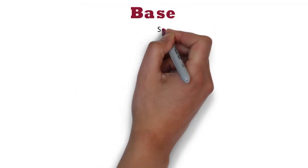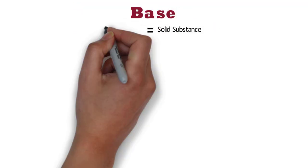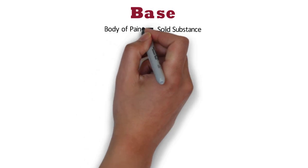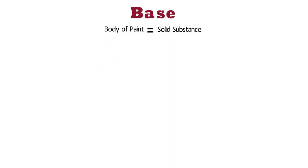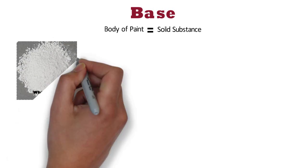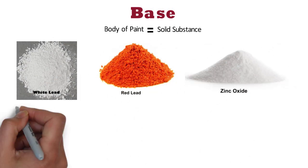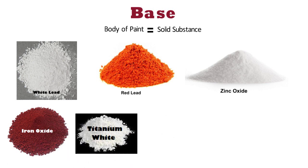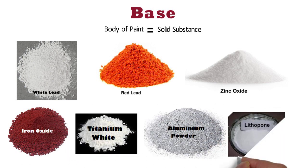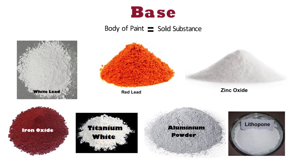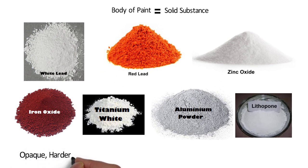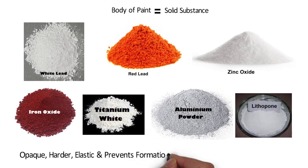Base is a solid substance that forms the body of the paint. Base usually consists of very fine powder of suitable material such as white lead, red lead, zinc oxide, iron oxide, titanium white, aluminum powder, lithophone, etc. Base makes the film of the paint opaque, harder and elastic, and it prevents the formation of shrinkage cracks.